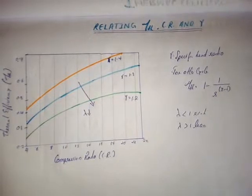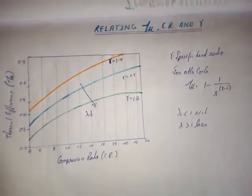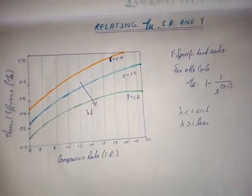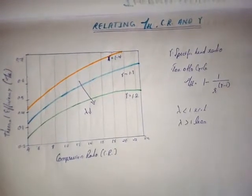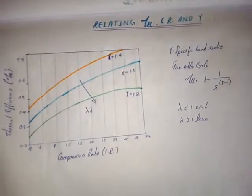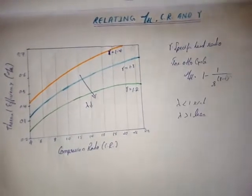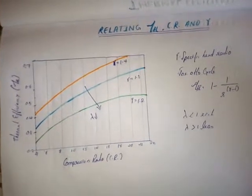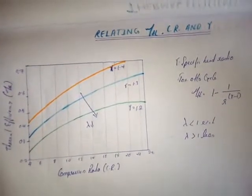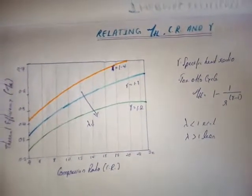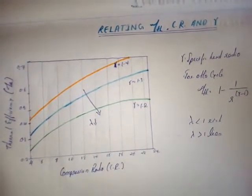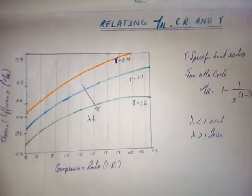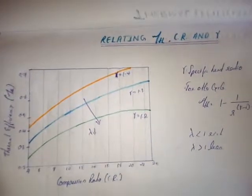So how can we relate these two, and when changing any of these - that means a change in thermal efficiency or change in compression ratio or change in specific heat ratio - how will it affect the others? In this graph, the relationship between thermal efficiency, compression ratio, and specific heat ratio is explained. The y-axis of this graph shows the thermal efficiency and the x-axis denotes the compression ratio.